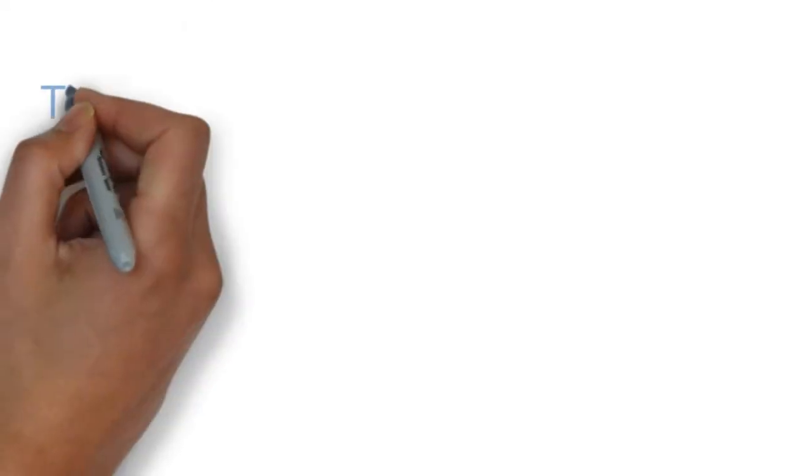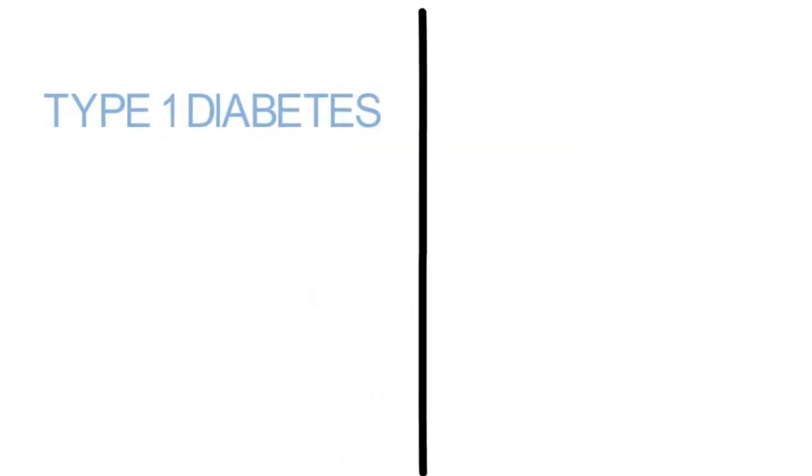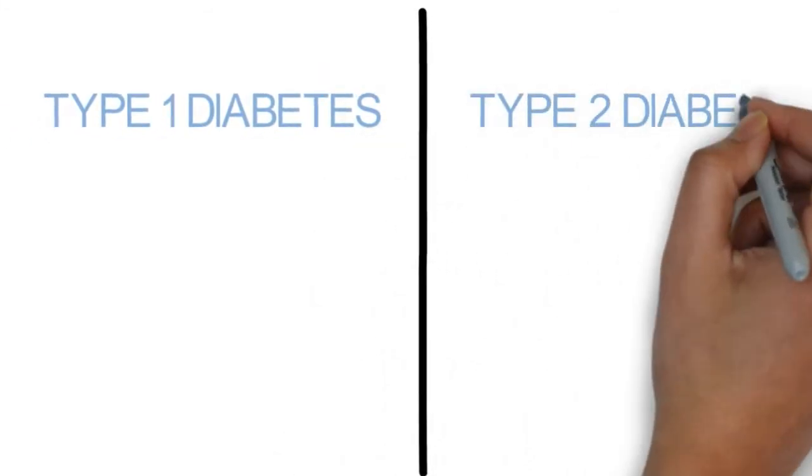There are two major subtypes of diabetes: type 1 and type 2. First let's look at type 1 diabetes.